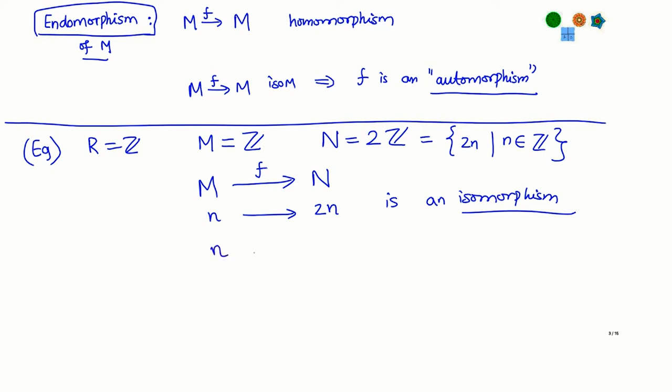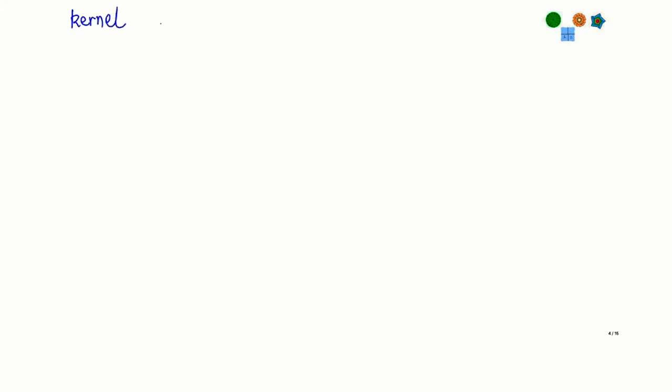In fact, that is not the only isomorphism. You can also construct another isomorphism n ↦ −2n, which is also an isomorphism. So when two modules are isomorphic, it is not always the case that there is a unique isomorphism between them — there are often many different isomorphisms between two isomorphic modules. Now, two more important notions are the kernel and image of a homomorphism, which you have seen already in the case of groups and rings.